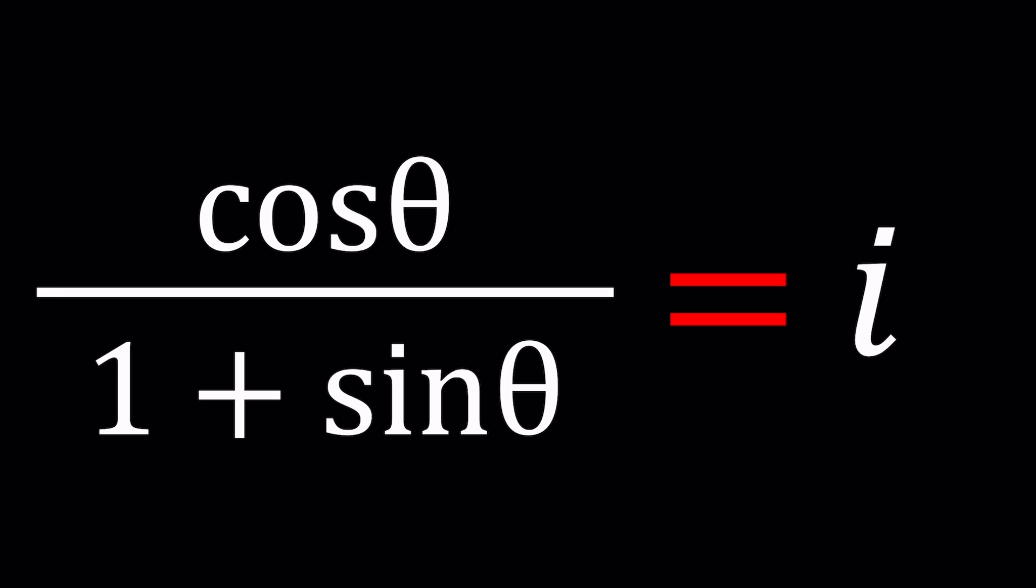Wait a minute, is that an equation? What is the unknown? i? No, i is a constant, theta is the unknown. So we're going to be solving for theta values, not for z.